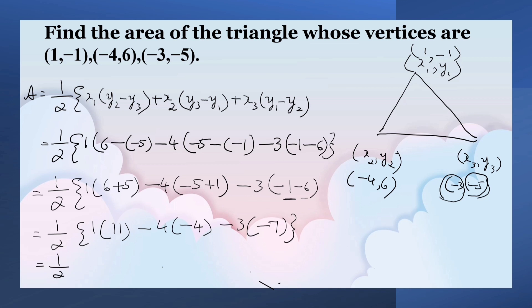Half into: this is 11, this is -4 into -4 which is plus 16 here, minus 3 into -7 which is plus 21. That is equal to half into 48, that is equal to 24. So 24 square units. Area of the triangle is 24 square units. Thank you.